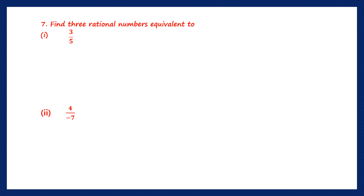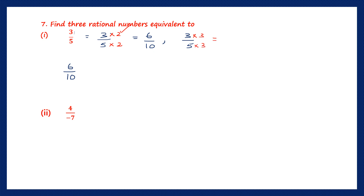Question 7: find 3 rational numbers equivalent to 3 by 5. To find equivalent numbers, multiply the numerator and denominator by the same number. Multiplying by 2: 3 times 2 is 6, 5 times 2 is 10 — giving us 6 by 10. Multiplying by 3: 3 times 3 is 9, 5 times 3 is 15 — giving us 9 by 15.